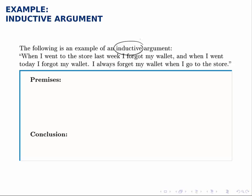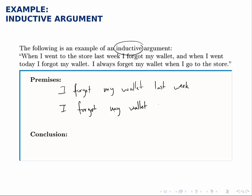The premises for this one are the first sentence. The premises are: I forgot my wallet last week, and I forgot my wallet today. Those are two specific cases, and from them this argument generalizes to the conclusion: I always forget my wallet at the store.